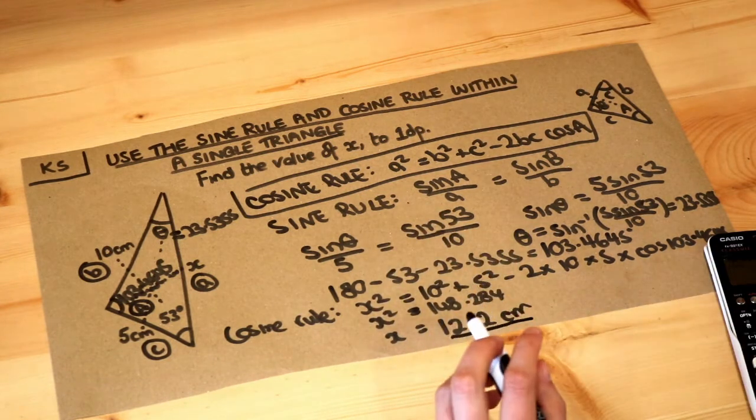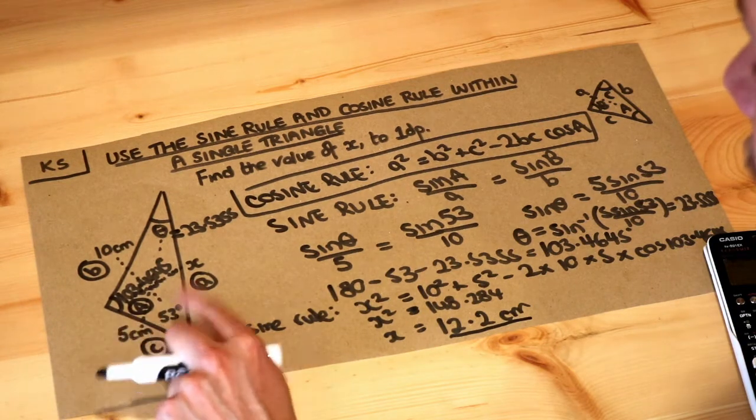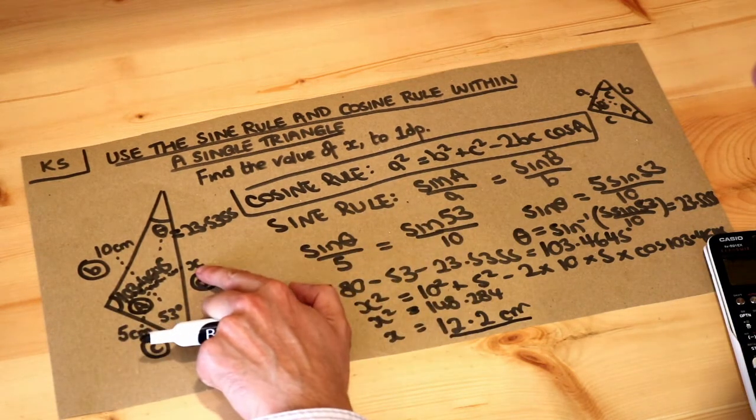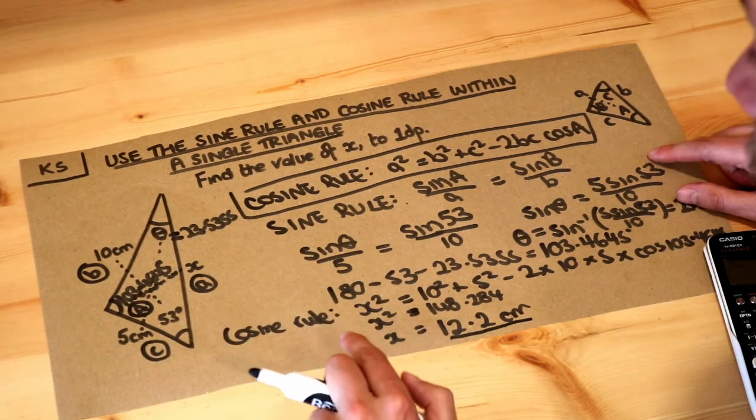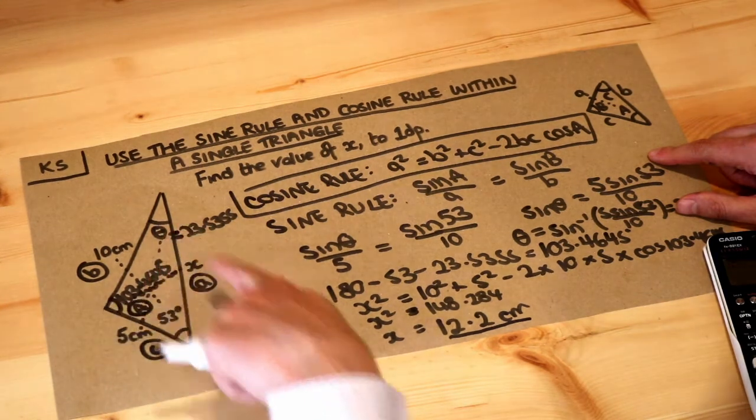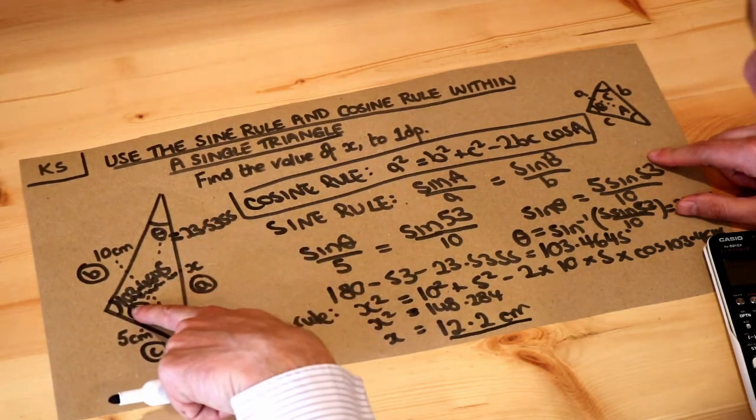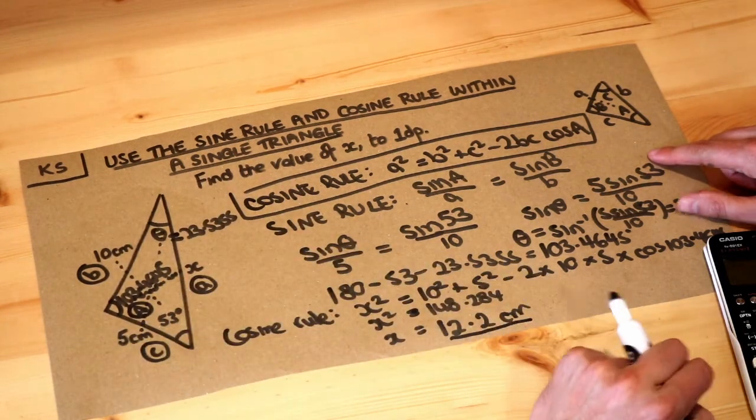Just to summarize, if you've got all three sides involved and an angle, but the unknown side is not opposite the known angle, then use the sine rule first to work out the angle opposite your other known side. Do 180 minus those two angles to find the remaining angle, and then use the cosine rule to work out what x is.